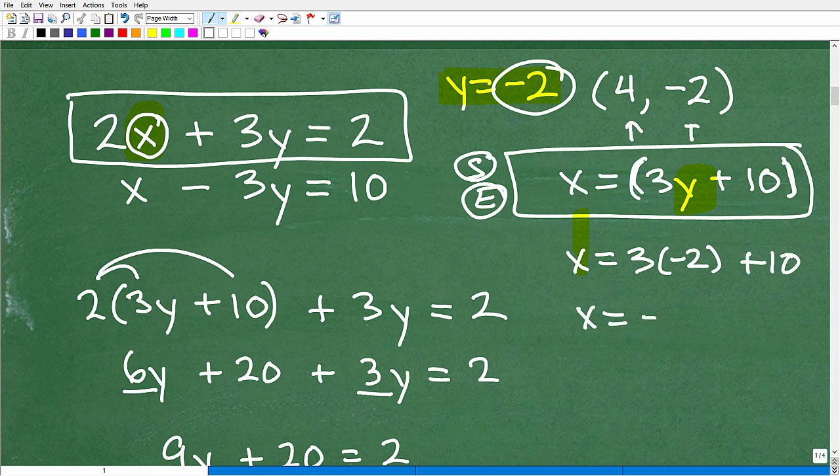That's going to be x = 3 times y. I know y now is -2, so let's plug that in, plus 10. So x is going to be equal to -6 plus 10. x equals positive 4, and that's what I told you it was. So (4, -2) is the point of intersection for those two lines.